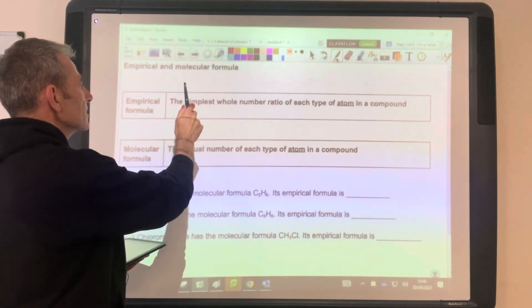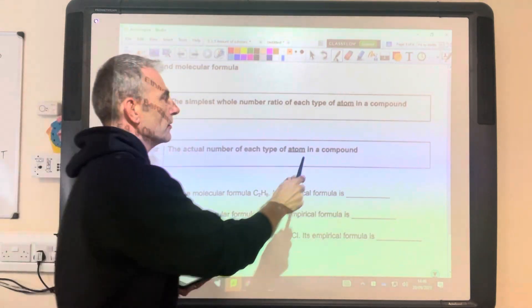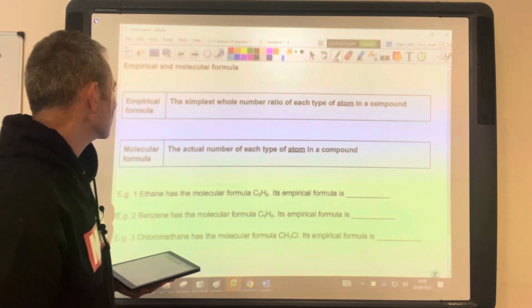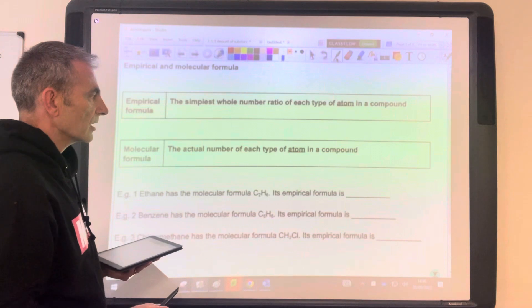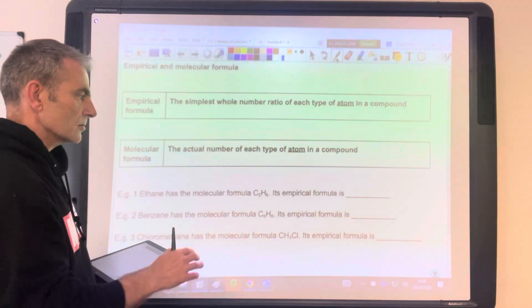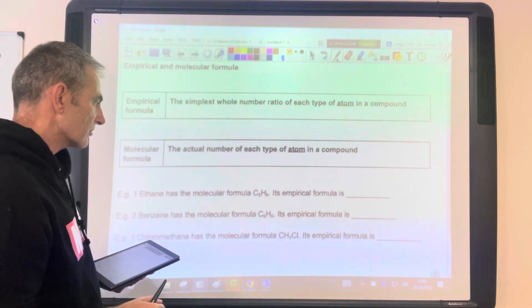Empirical formula: simplest whole number ratio of each type of atom in a compound, whereas the molecular formula is the actual number of each type of atom in a compound. So just three examples just to illustrate that.